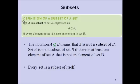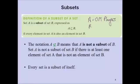So, subsets. We've got to start with a definition. Set A is a subset of set B, expressed as A ⊆ B, if every element in set A is also an element in set B. A nice example: set A is Orlando Magic players, and set B is NBA players. All Orlando Magic players are in the NBA, so A is a subset of B. The notation 'A is not a subset of B' applies when there is at least one element in A that is not in B.